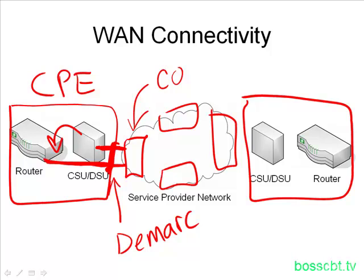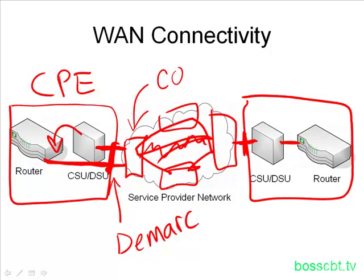The circuit then goes through the service provider network — it's not just one physical circuit running straight through, but connects through different points within the provider network. Eventually it comes out to a DMARC on the far side and connects to the equipment over there. If there's a separate CSU-DSU, that then connects to the router, giving us the CPE pair on the other end.